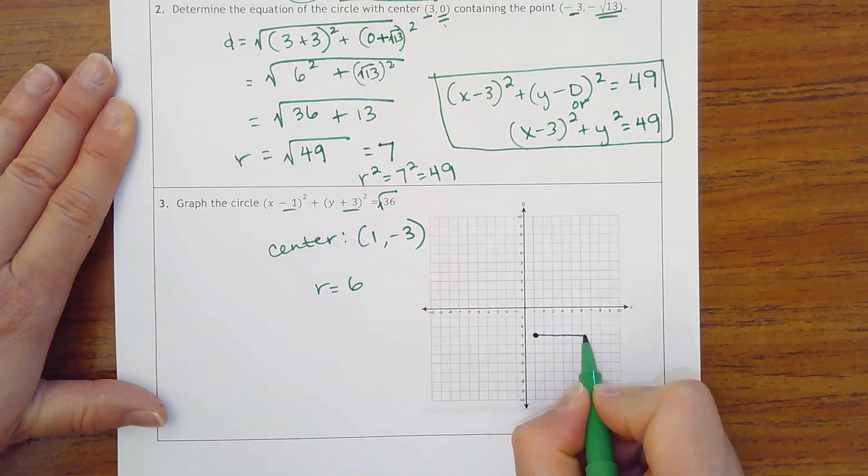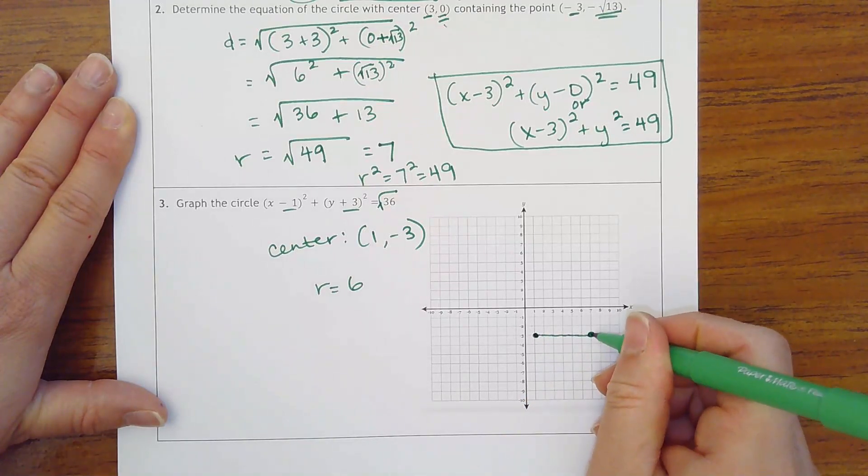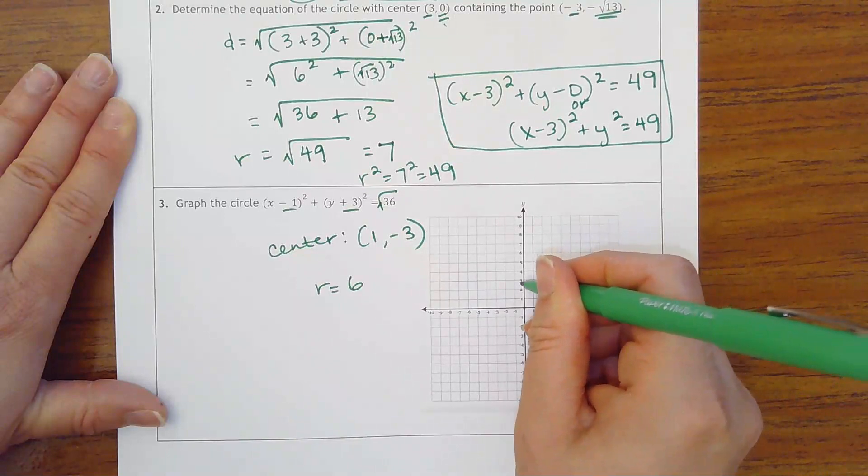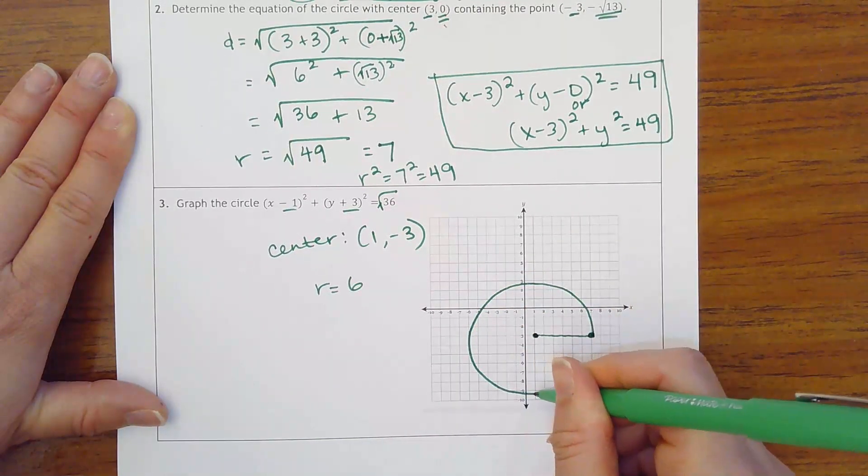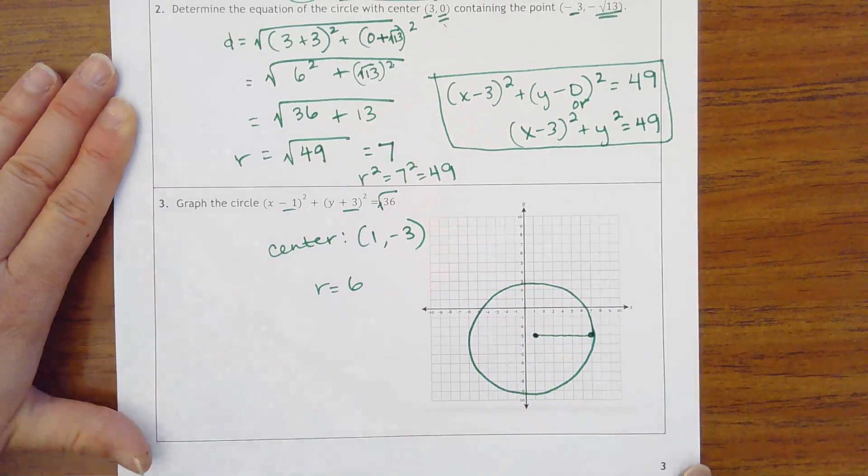1, 2, 3, 4, 5, 6 units and it will already have the circle for you. Okay, not perfect but pretty close.